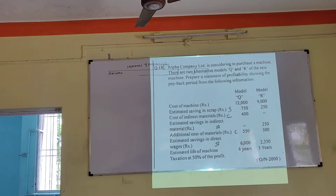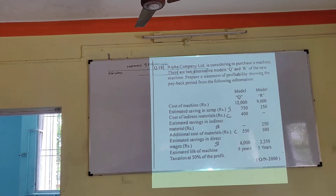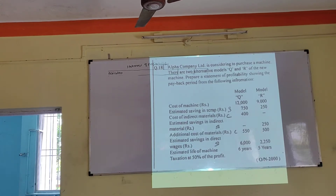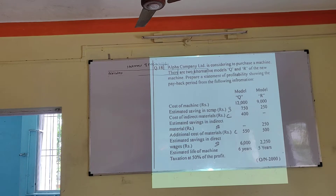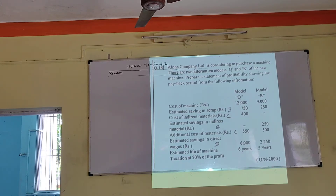Take down the problem which is on the board. Alpha Company Ltd. is considering purchasing a machine. There are two alternative models, Q and R, of the new machine. Prepare a statement of profitability showing the payback period from the following information.